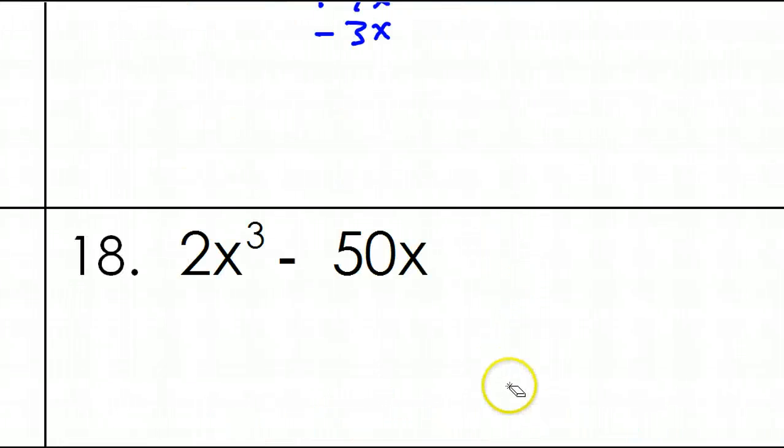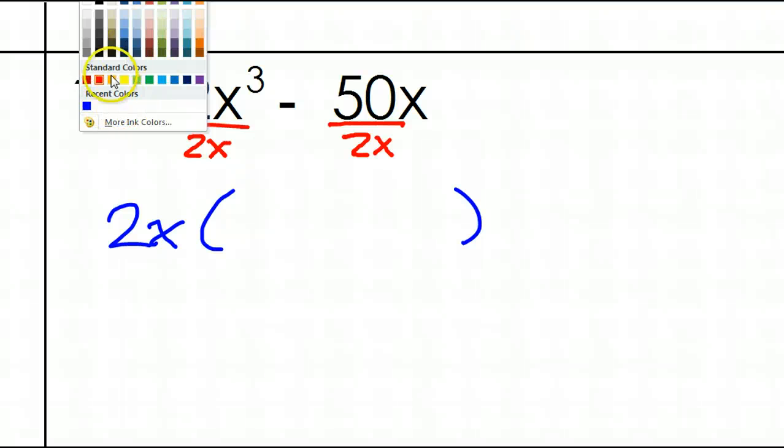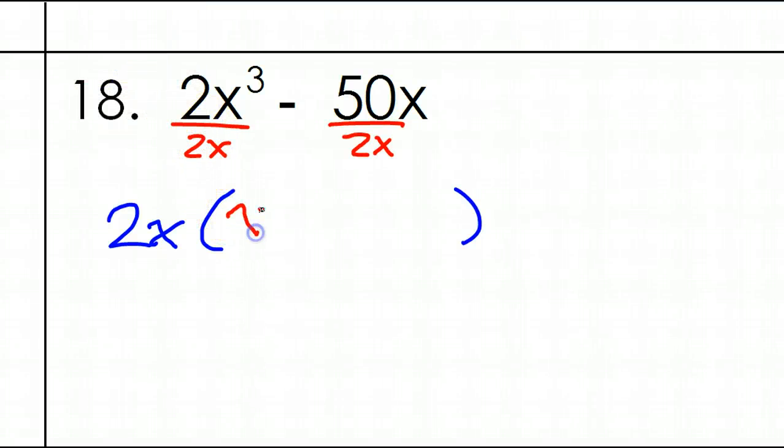Okay, so I think we are on number 18. This is part five of our series. I think I already said that. Anyway, first, you look for the GCF. So let's see, two goes into both of these, so I would pull that out. Also, both of these have at least one x, so you do that too. Dividing by your common factor, dividing both of these by 2x reveals that I will have x squared minus 25.